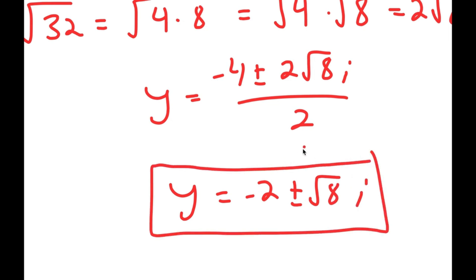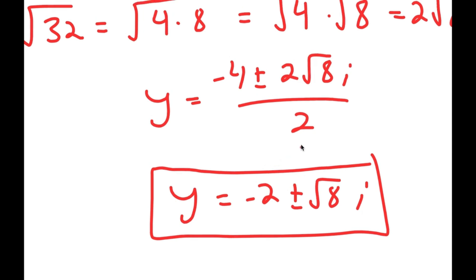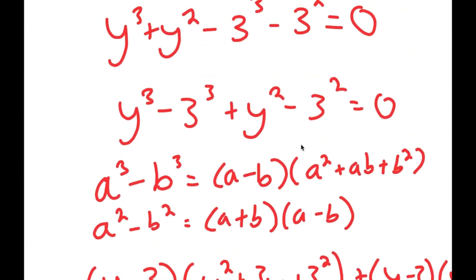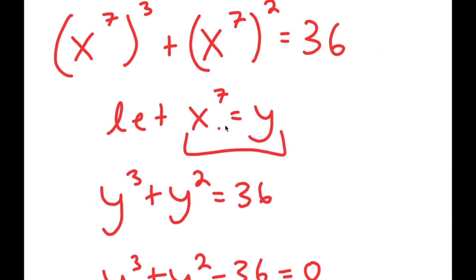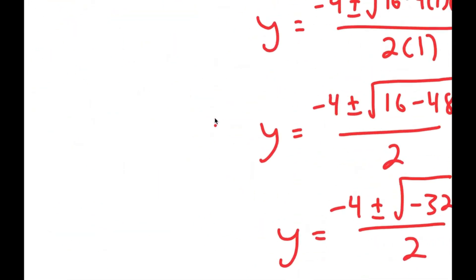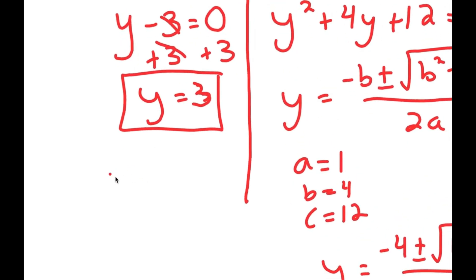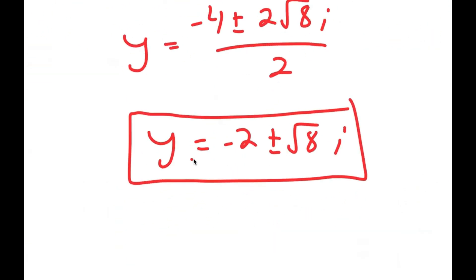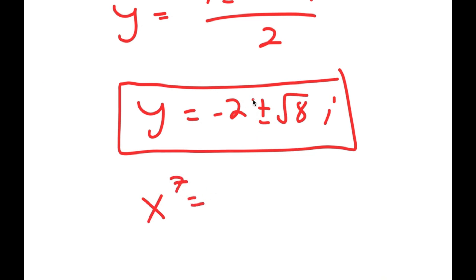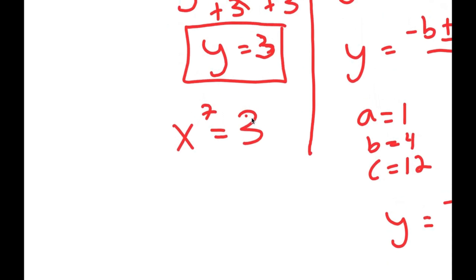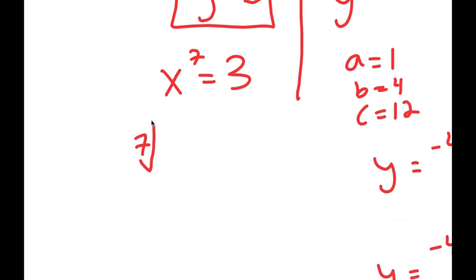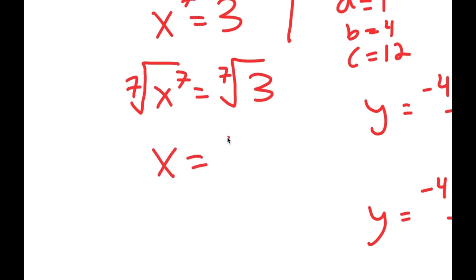However, remember we let x to the power of 7 equal y. Since x to the power of 7 cannot equal an imaginary number, we cannot use those two complex values of y. The only usable value is y equals 3. So x to the power of 7 equals 3, and taking the 7th root of both sides gives x equals the 7th root of 3.